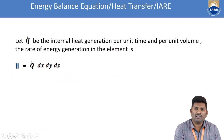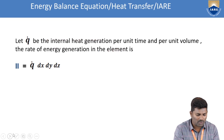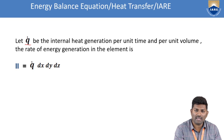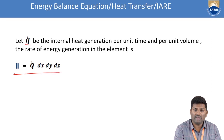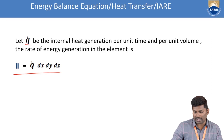For the second equation, that is the internal heat generation per unit time, we consider q-dot as the internal heat generation per unit time and per unit volume. This is given by q-dot into dx dy dz, representing the internal heat energy along x, y, z directions. That is the second term.